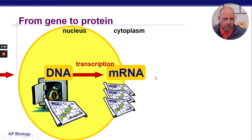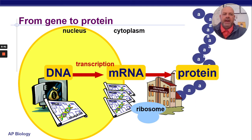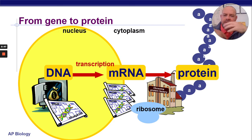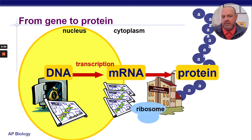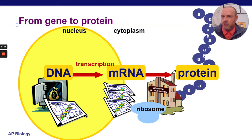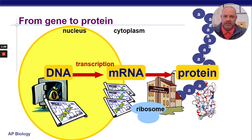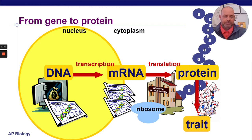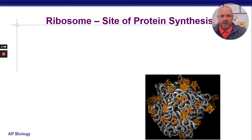We looked at this diagram where you have the DNA in the vault, you make copies of the mRNA, and now they're going to go out and find the protein factory, which is the ribosome. Notice transcription takes place in the nucleus because it involves DNA. Translation is going to take place out in the cytoplasm at the ribosome.